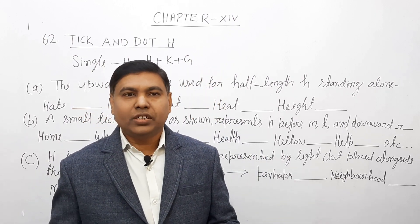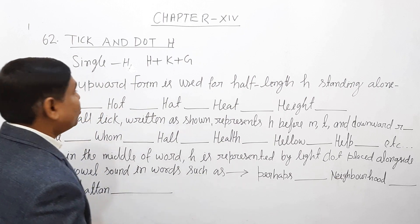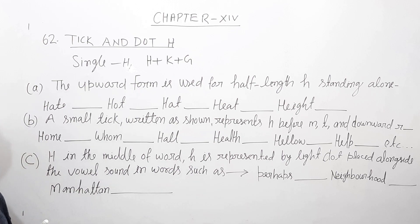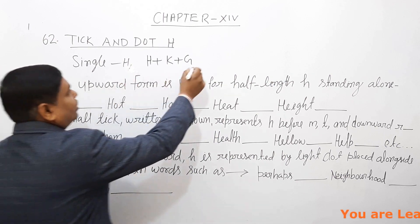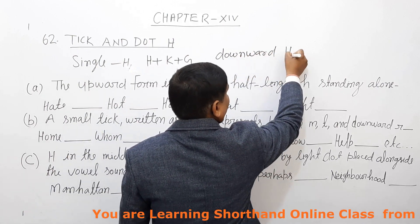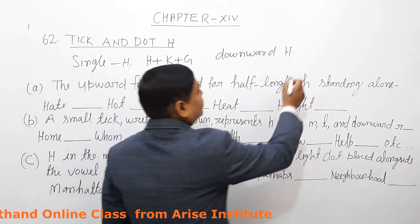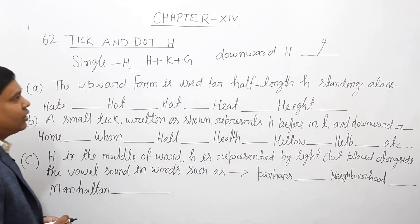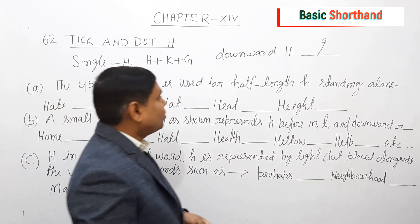जो कुछ conditions आपने पहले ही पढ़ चुके हैं, और आज आपको हम जैसा board पे लिखा हुआ है वैसे बताएंगे। तो हमें downward H लिखना है। इसके साथ K और G भी आएगा, तब भी हमारा downward H means कि ऐसे आपको लिखना है। तो इसमें कुछ examples हैं जो हम आपको बता देते हैं।